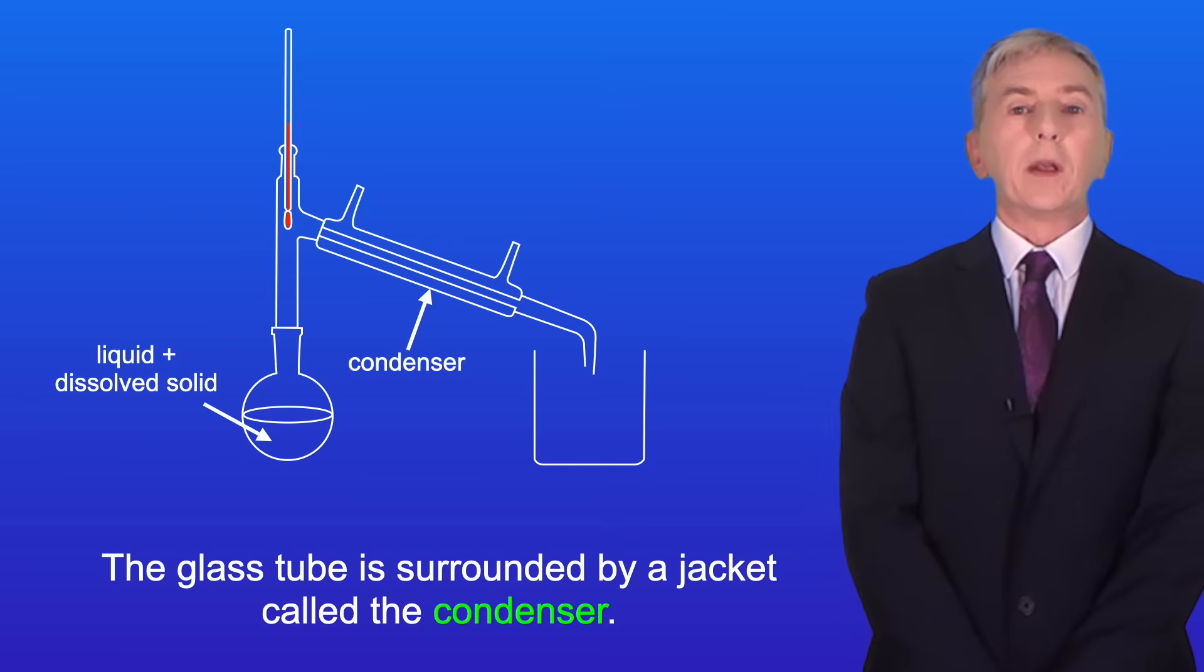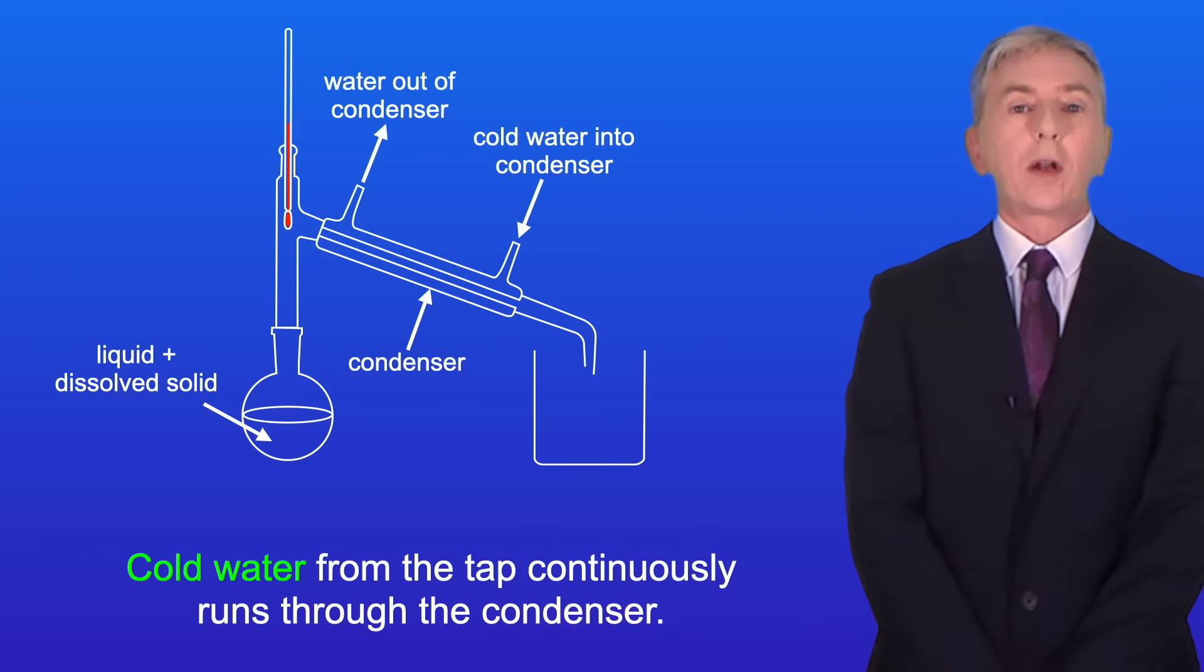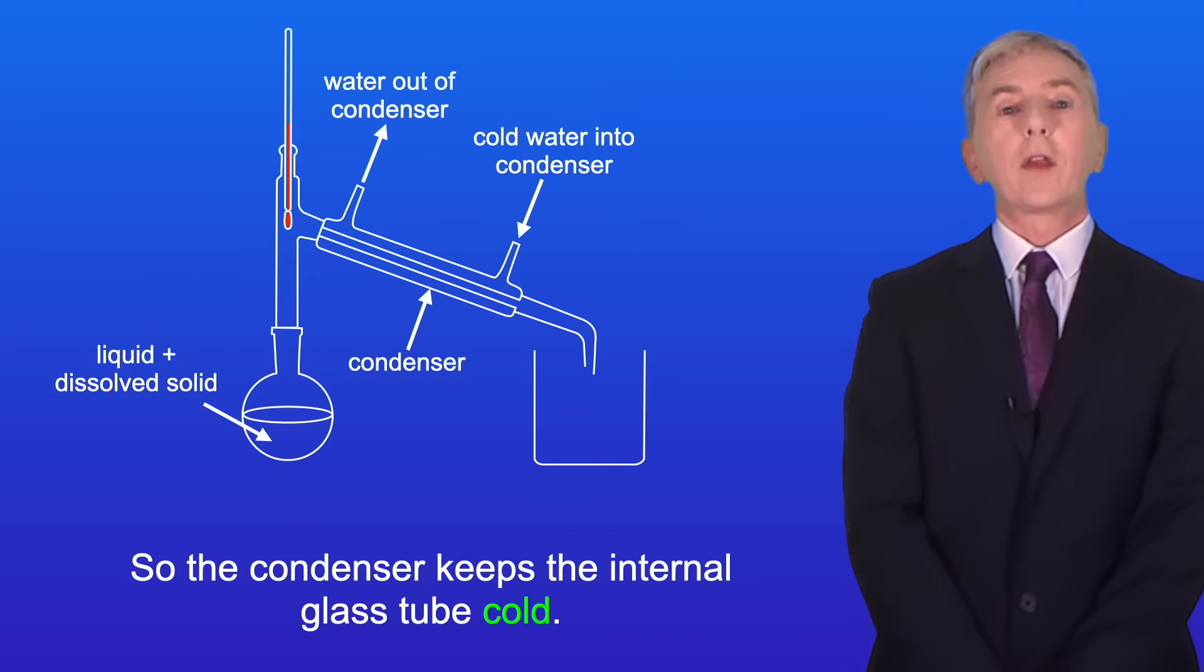The glass tube is surrounded by a jacket called the condenser. Cold water from the tap continuously runs through the condenser, so the condenser keeps the internal glass tube cold.